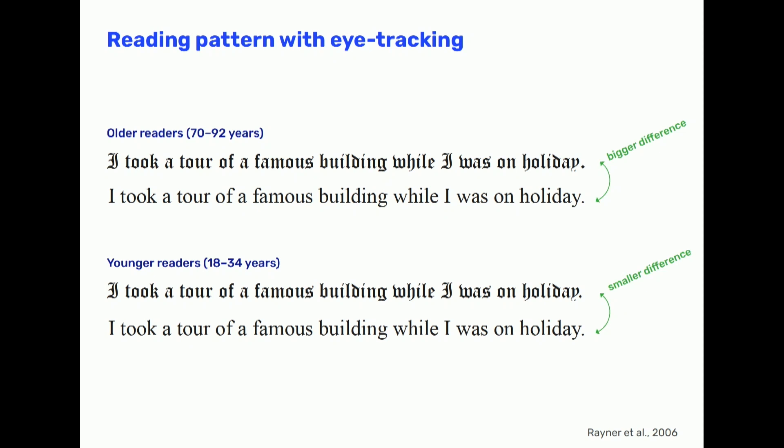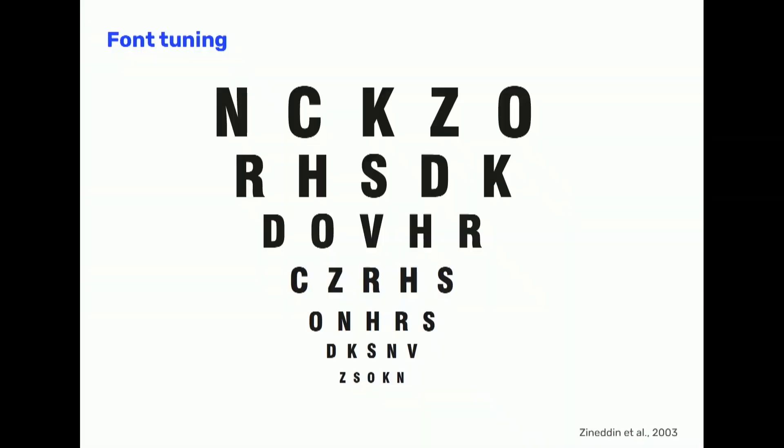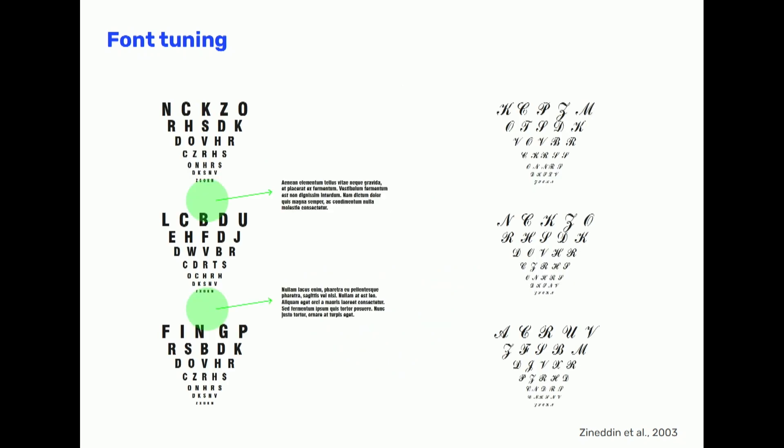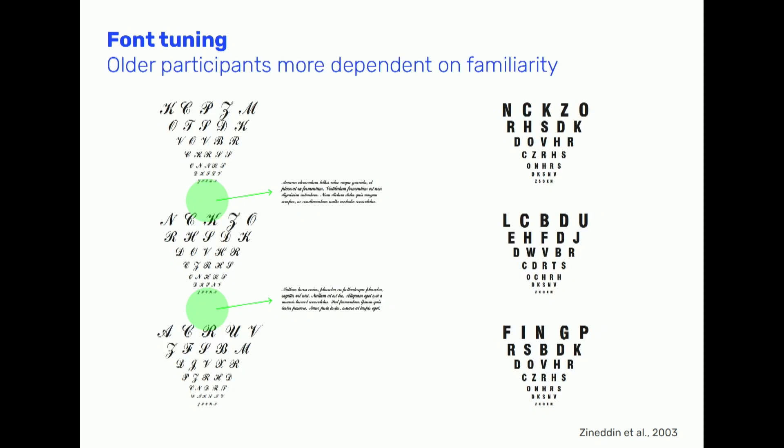That leads to the next point of distraction. In this experiment, researchers were interested in seeing how young and older people adjusted to different font styles with practice. They tested different font styles in a chart, and the task was to read three different charts in the same font — sometimes with no practice in between, and sometimes with a practice session of reading a text in that specific typeface. What they found was that older people benefited much more from this practice, as they take longer to tune into a font style than younger people do.